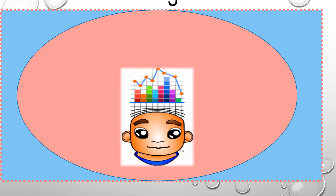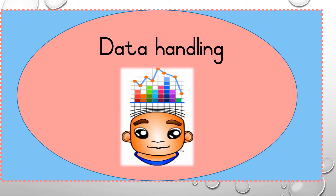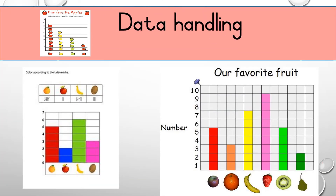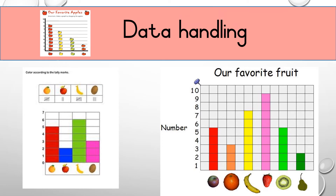The next thing we will look at is data handling. You can remember we looked at some graphs and some tally marks. Here on the left side of the screen you will see your tally marks. We have a lemon, an apple, a banana and a coconut. If we count the tally marks of the lemon, we will see there are five tally marks.